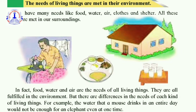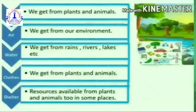Children, we all know the basic necessities of our life. The basic necessities of our life are food, air, water, clothes, and shelter. Now let us see how these things form our basic necessities. We get food from plants and animals. We get air from our environment. We get water from rains, rivers, lakes, etc.